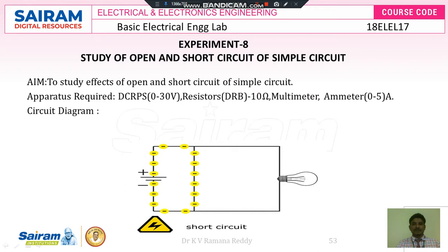Now look at the following circuit diagram. This is a DC voltage source having positive and negative polarity. If there is no short circuit path, current will flow from the positive terminal through the bulb and back to the negative terminal of the DC voltage source.